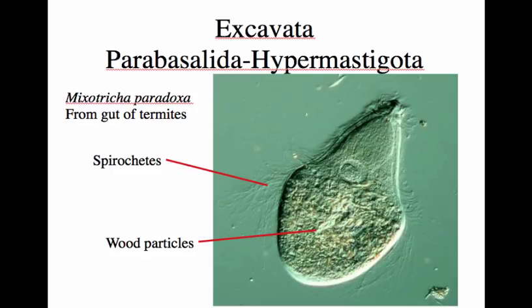Plot twist number one: Mixotricha breaks down cellulose, but it doesn't actually produce the cellulase on its own. Its genome doesn't have any genes coding for cellulase. It gets the enzyme from intracellular cellulase-positive bacteria that it harbors within its cytoplasm. You can see why Margulis loved these—it's like endosymbiosis on steroids: a bacterial cell living within the eukaryotic microbe, living within the termite, like those nested Matryoshka dolls from Russia.